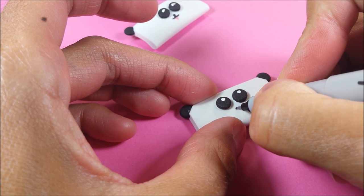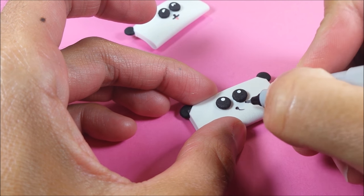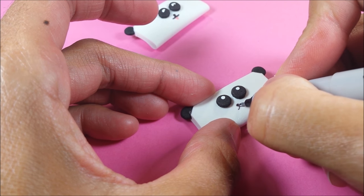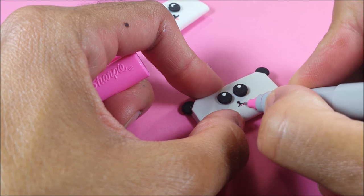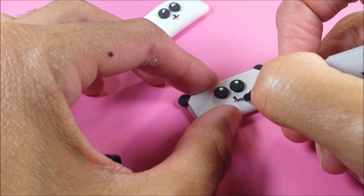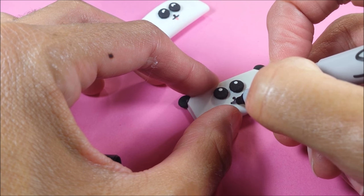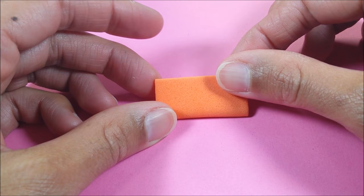With a super thin Sharpie, I'm just making a tiny nose and a tiny little mouth. It was too tiny, so I'm extending it just a little bit.